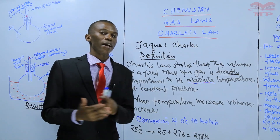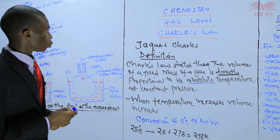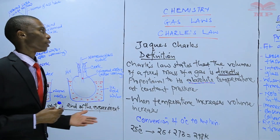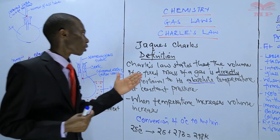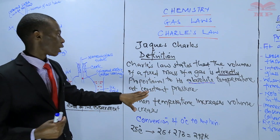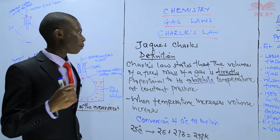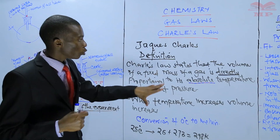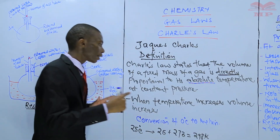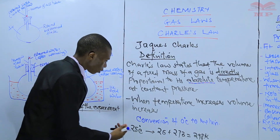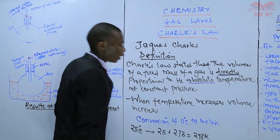I hope you get that clearly. That is the simple experiment you can use to demonstrate Charles' Law. That is the end of our lesson, but just before we end, let's review what we've learned. We started with the definition: Charles' Law states that the volume of a fixed mass of a gas is directly proportional to its absolute temperature at constant pressure. Remember, anytime you do calculations on Charles' Law, the temperature is always converted to Kelvin by adding 273. For example, 25 degrees Celsius plus 273 equals 298 Kelvin.